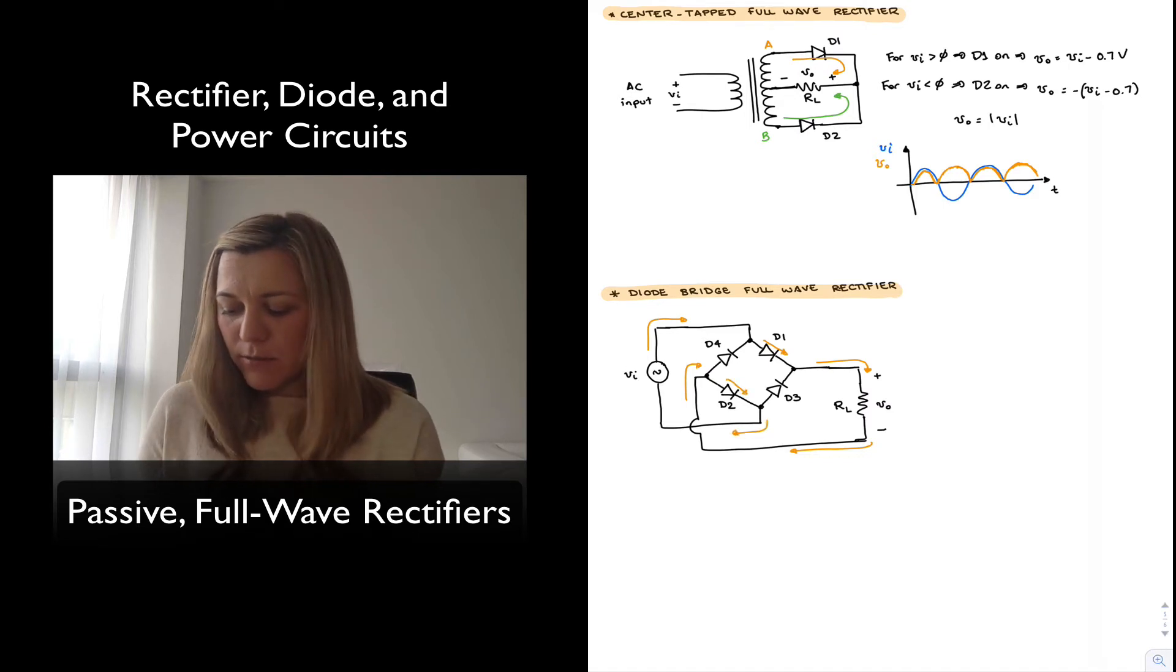So for positive input signals, v_in greater than zero, basically we'll have that D1 and D2 are turned on. Therefore, our v_out signal is equal to v_in minus, and notice that in this case it's two diode drops, one for D1 and another one for D2.